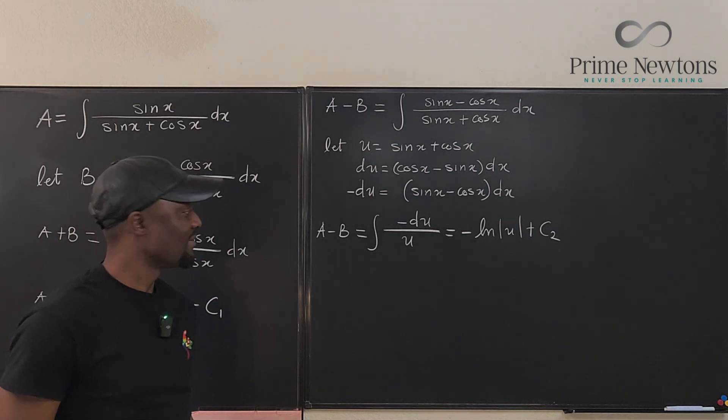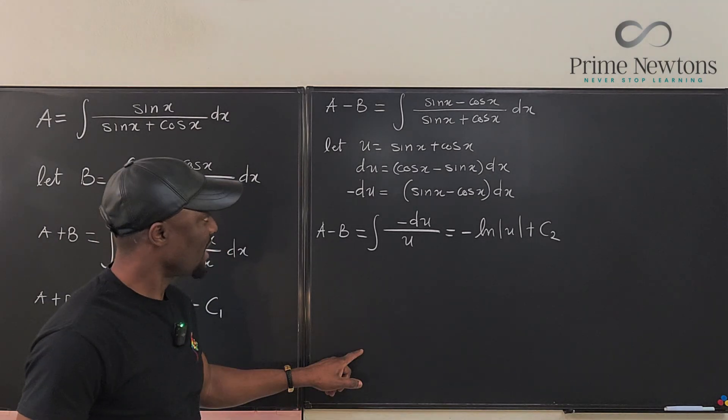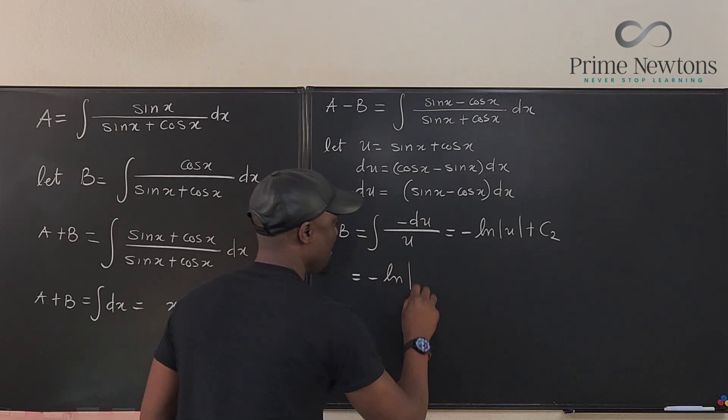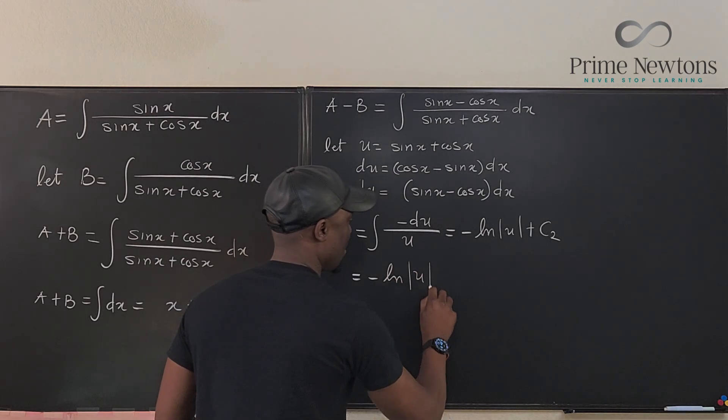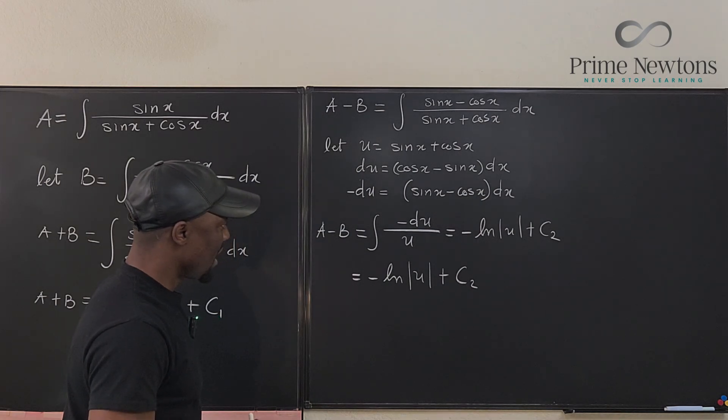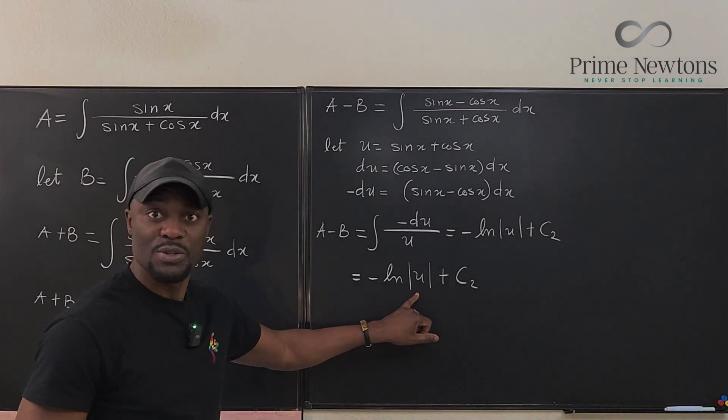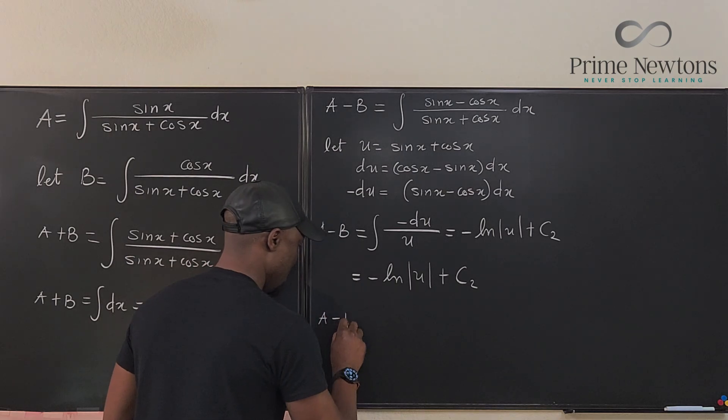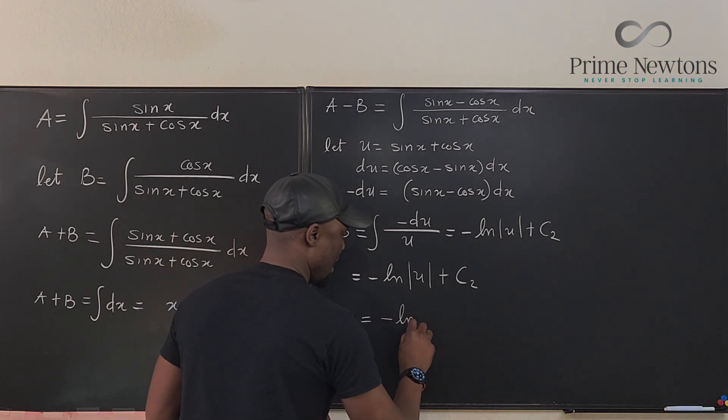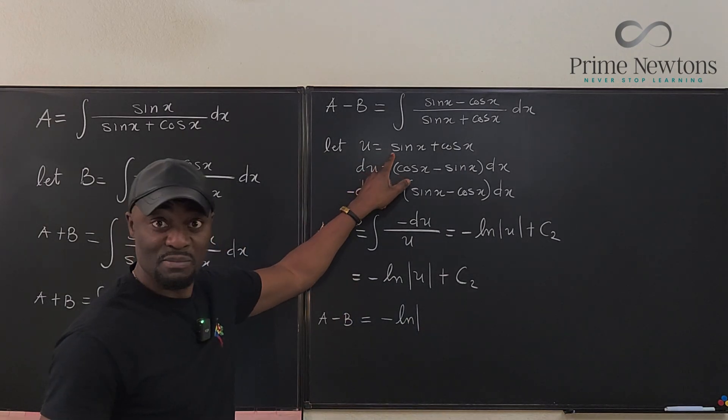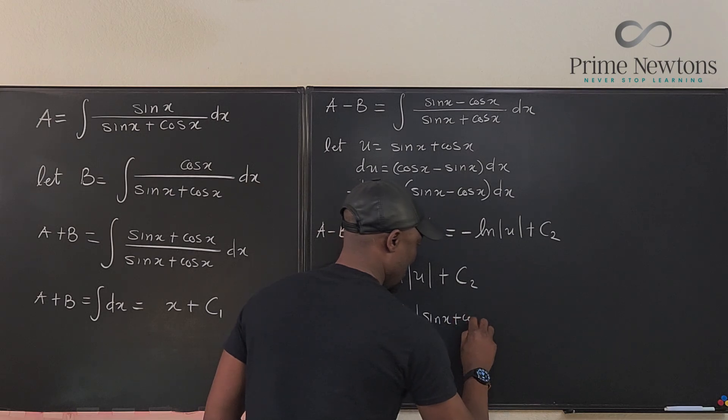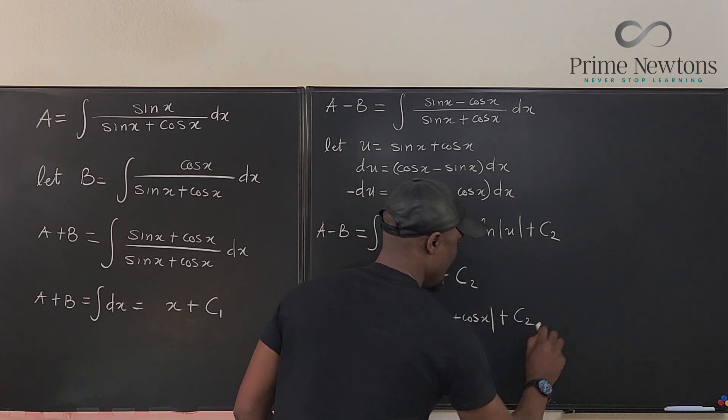If you integrate this, negative comes out, your answer is going to be negative natural log of u plus C₂. Let's write the actual u. A minus B equals negative ln of sin(x) plus cos(x) plus C₂.